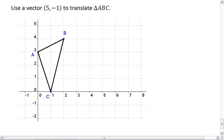Well, that we have vector (5, -1) tells us we're going to the right 5 units, and we're going down by 1 unit.